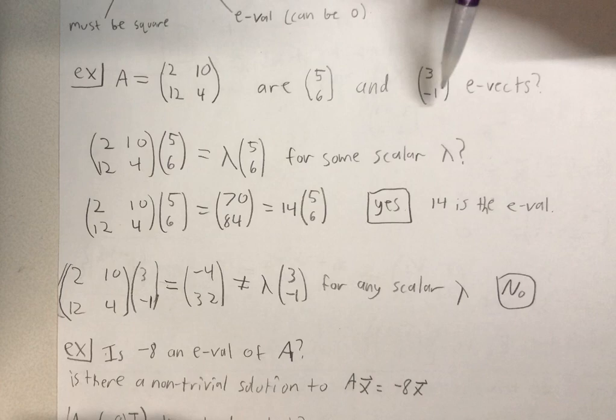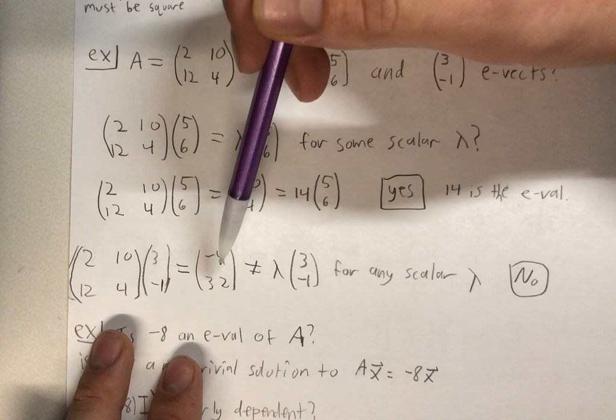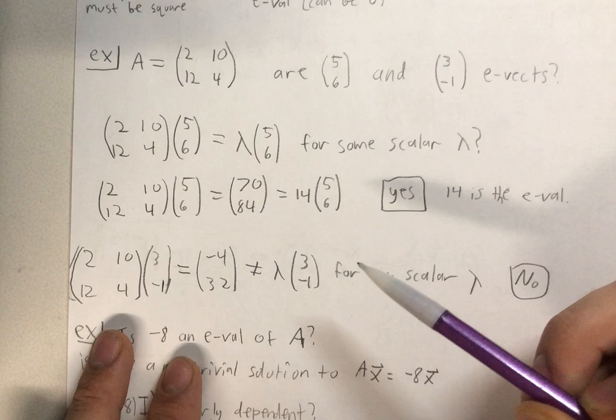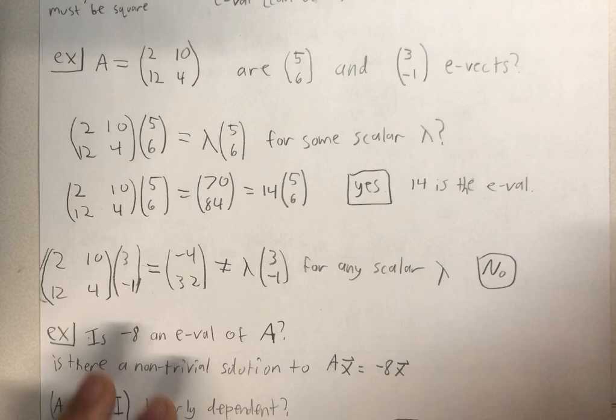So let's do the same for 3, negative 1. So we have 2, 10, 12, 4 times 3, negative 1. That equals negative 4, 32, which does not equal any scalar lambda times 3, negative 1, so the answer would be no.